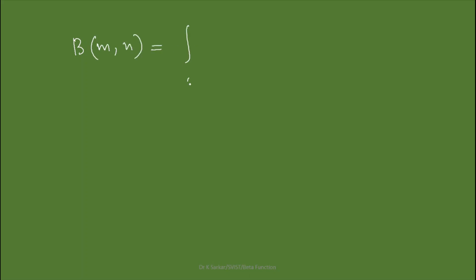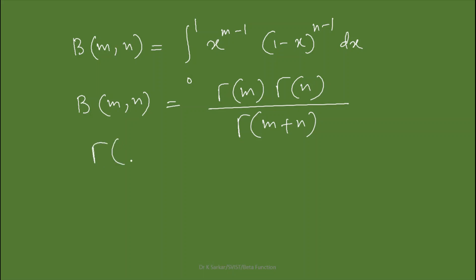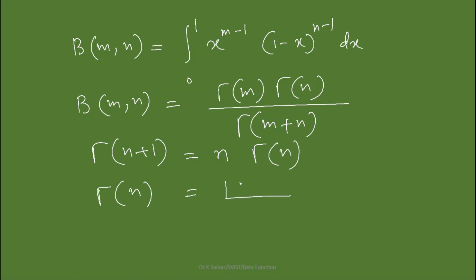Let us recall a few formulas: Gamma(n) divided by Gamma(n), Gamma(n+1) equals n·Gamma(n), and Gamma(n) equals factorial of (n minus 1).